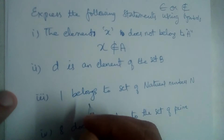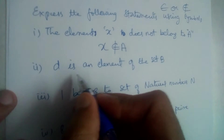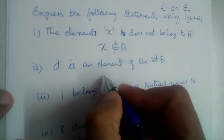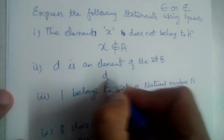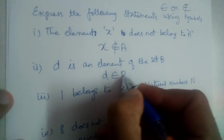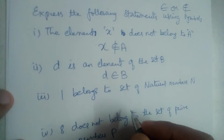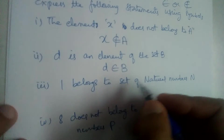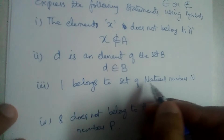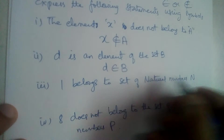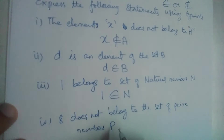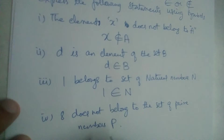D is an element of set B, that means d belongs to set B. One belongs to the set of natural numbers — yes, 1 belongs to the set of natural numbers.